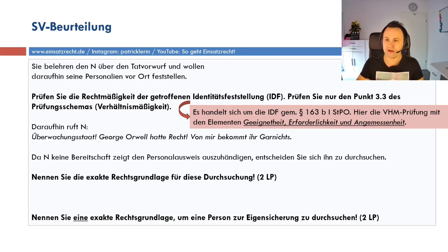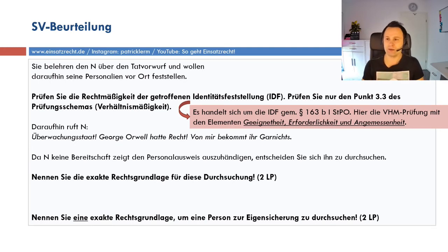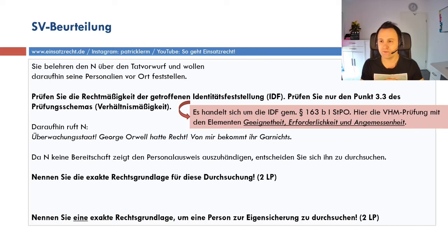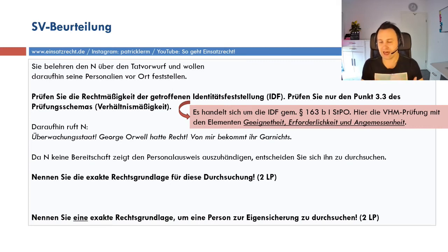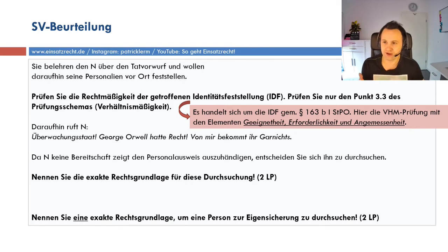Der Schwerpunkt liegt auf der Angemessenheit, da geht es um die Güterabwägung. Ich muss wissen, in welche Grundrechte ich mit der IDF beim N eingreife und wie intensiv. Auf der anderen Seite: Welche Rechtsgüter möchte ich schützen? Bei Straftaten gibt es den Strafverfolgungsanspruch des Staates, den ich durchsetzen will. Ich habe natürlich auch das Eigentumsrecht des Ladens in Bezug auf die Burger – Burger im Sinne von Hamburger – das Rechtsgut will ich schützen.